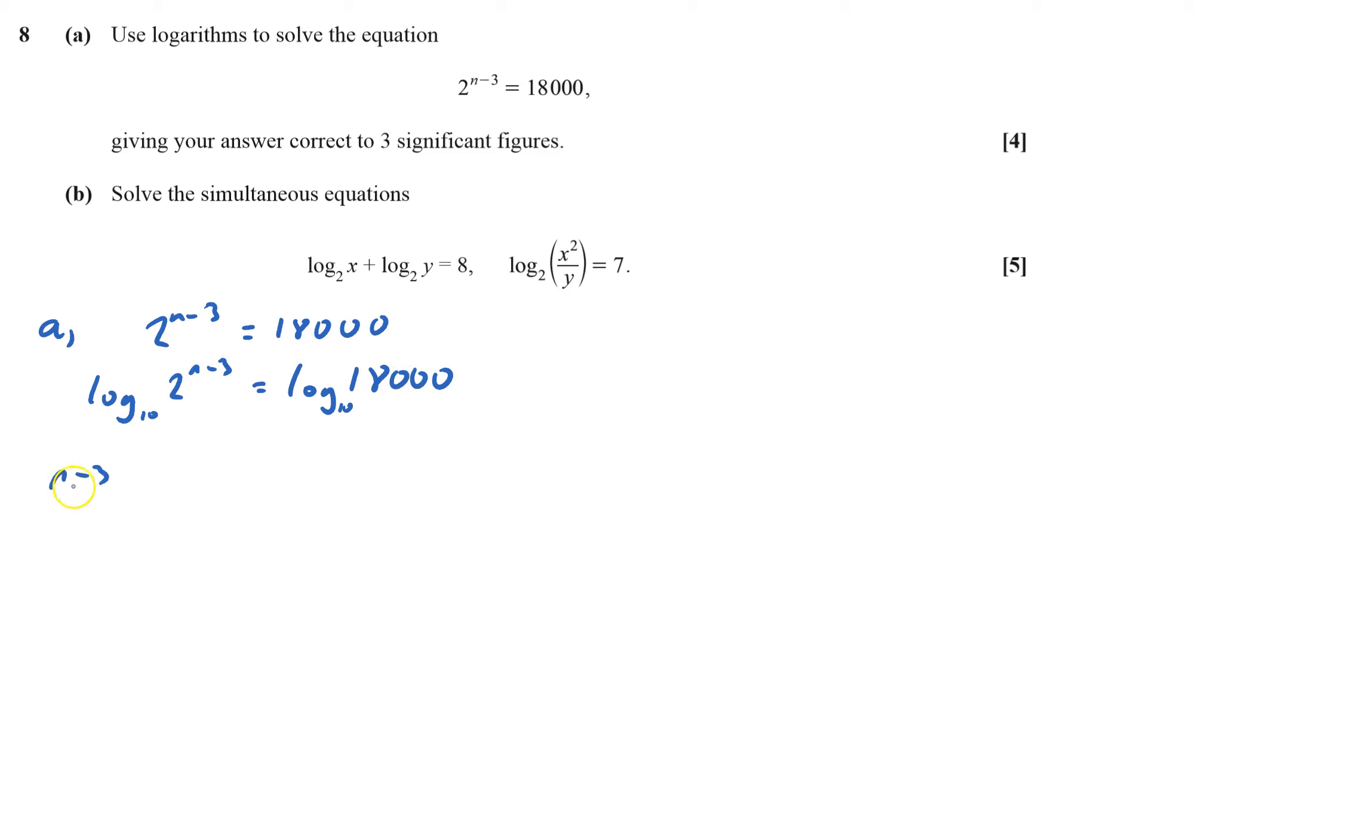I've got to bring down the n minus 3, should put it in brackets, because it's log n minus 3 times by log 2, and that equals log of 18,000. And so n minus 3 equals log of 18,000 divided by log 2, and so n minus 3 equals 14.1357, so n equals 17.1357, which equals 17.1 to 3 significant figures as requested.